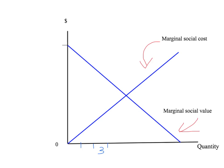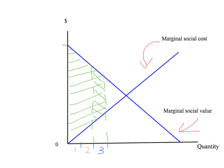Let's summarise where we've got to. The net social gain from producing and consuming a unit — say the third unit — is simply the difference between the marginal social value and the marginal social cost of that unit, including all the externalities. Second, if we want the total value created to society from, say, the first three units of production, we simply sum up the benefits from each unit. That's given by the total shaded area between our marginal social value and marginal social cost curves, all the way up to the third unit.